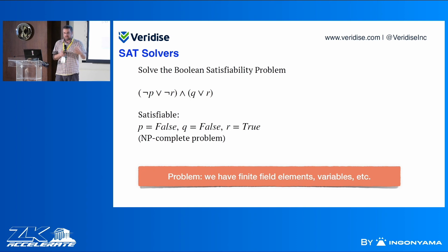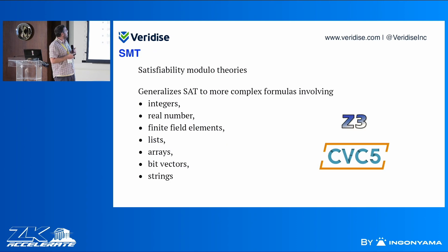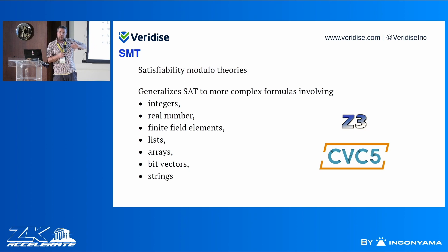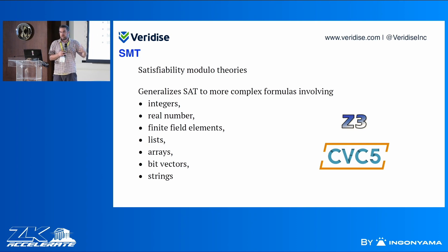In our case, our constraints are polynomial equations over a finite field. So we don't only work with truth values — we also work with additions, multiplications, field elements, constants, and so on. A normal SAT solver will not suffice. That's why we use SMT solvers — Satisfiability Modulo Theories. The idea is you take a normal SAT solver and add an additional theory: the theory of integers, the theory of real numbers, or in our case, the theory of a finite field. Then you can ask whether a formula in that theory is satisfiable or not. The SMT solver will either tell you it is unsatisfiable, or that it is satisfiable and give you a model.